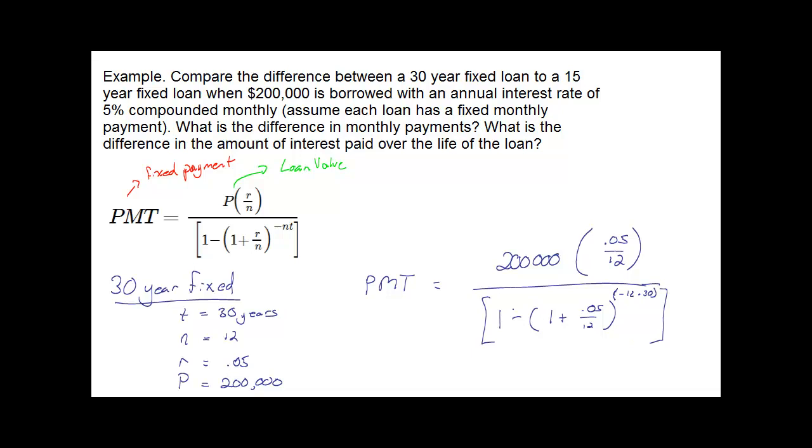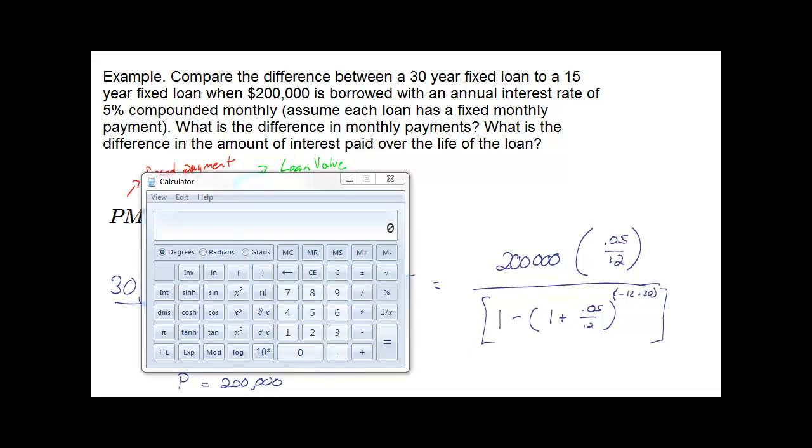Now we're left with evaluating this into a calculator, which can be easy to get wrong if you don't have the parentheses in the right places so the order of operations work correctly. On the calculator, depending on your type, you may have to figure out how to get that negative up in the exponent. I'll show you a trick to get negative 12 times 30 inside there.